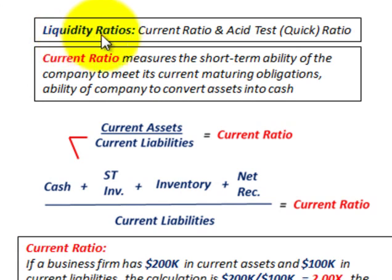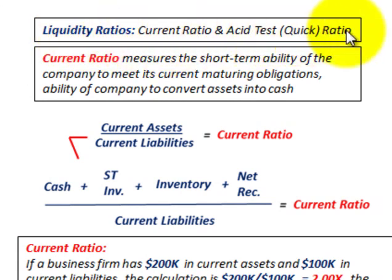What we're going to be looking at here are liquidity ratios — specifically the current ratio and the acid test, or quick ratio.